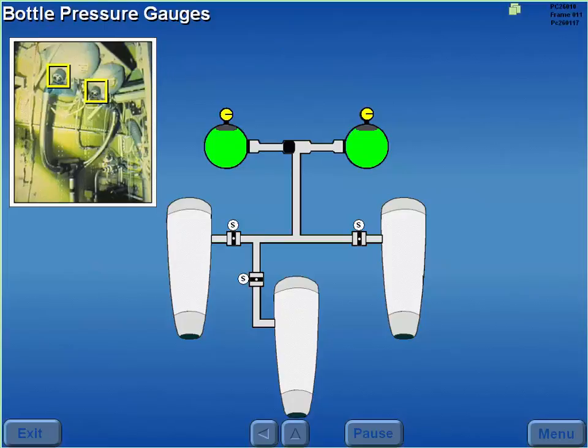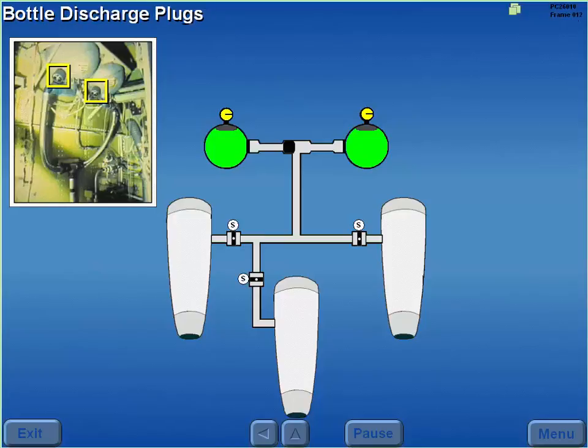Each bottle is equipped with a direct reading pressure gauge. When bottle discharge is initiated, an explosive cartridge opens a plug, which allows halon to flow from the bottle.